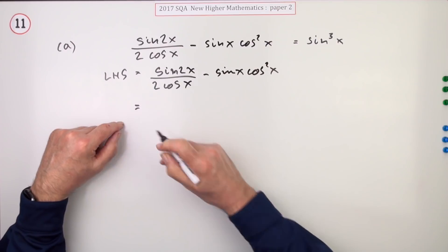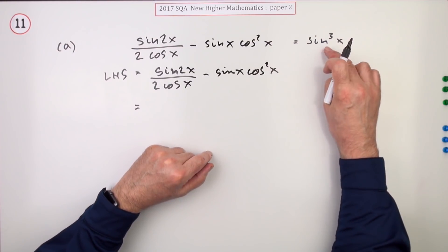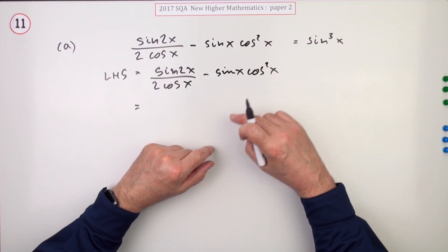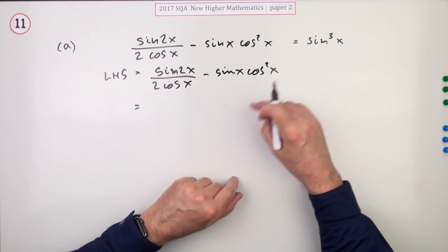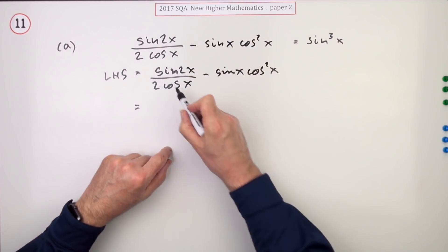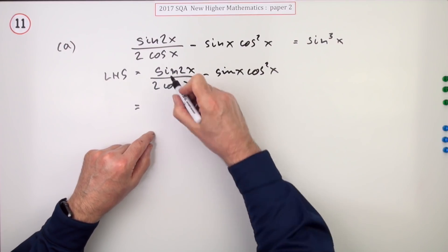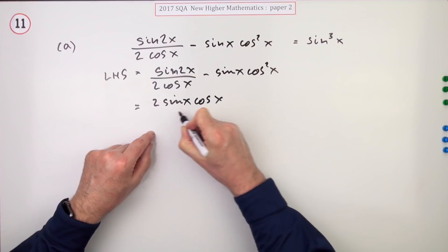And then you just have to look at this and think what's this got that you don't want, because this is what you're aiming for. Well, I don't want cosines, so that'll have to go somehow. And I've got a double angle and there's no double angle there, so that'll need to go. So the first obvious thing is get rid of that sine 2x. So that can turn into 2 sine x cos x.